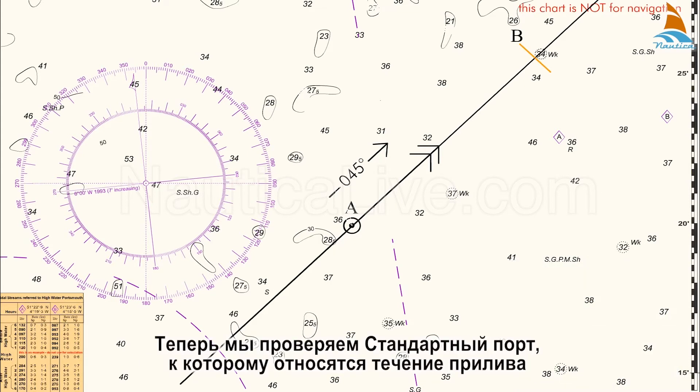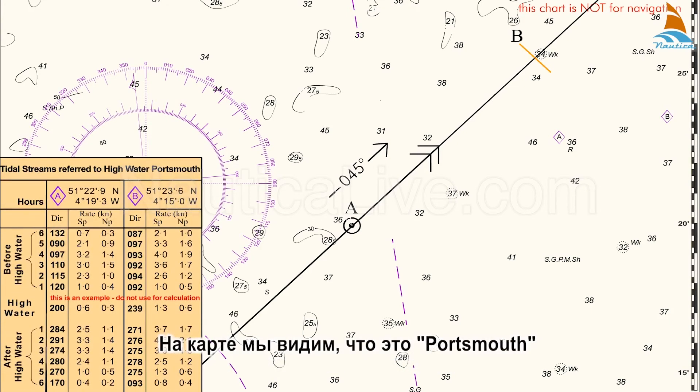Now we check the standard port to which the tidal streams refer. On the chart, we find out that it's Portsmouth.